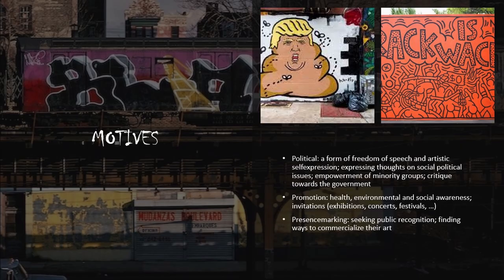You might be wondering: why do street artists paint on public property? Why not on canvases? There are three common motives. Number one: political motive. A political motive can be seen as a form of freedom of speech and self-expression. Street artists usually express their thoughts and worries about socio-political issues, and they sometimes also go as far as critiquing the government.